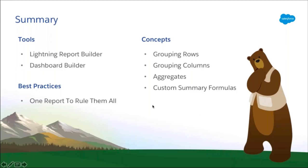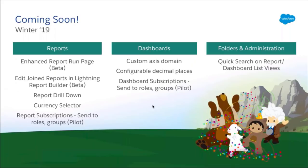That's the demo. Let's summarize what we just did: we built a report using the Lightning Report Builder, added the report chart to a dashboard, then added more charts from that same report using the best practice of 'one report to rule them all' — using one report to answer multiple questions with multiple dashboard components. When building the report, we grouped rows for a summary format, then added column groupings to make it a matrix report. We used aggregates to sum the deal amounts, then used a custom summary formula to calculate each person's percentage contribution to the team total.